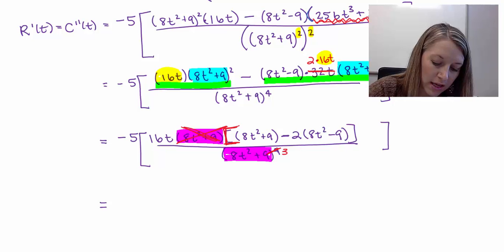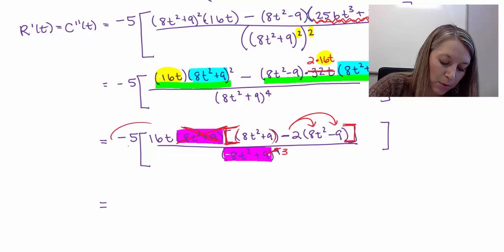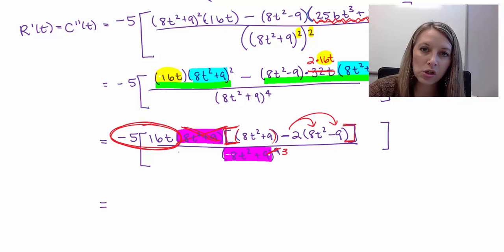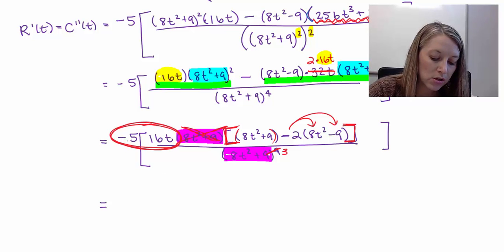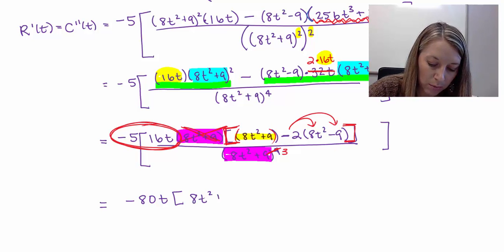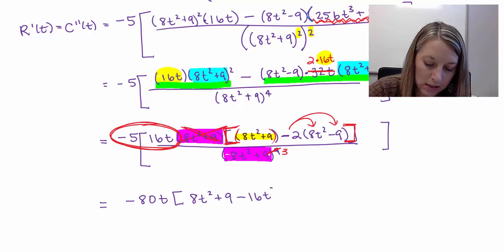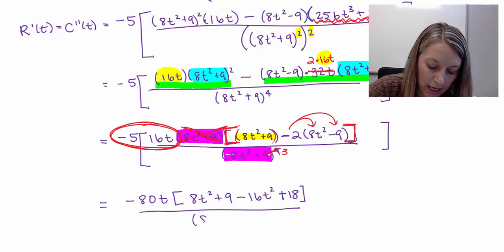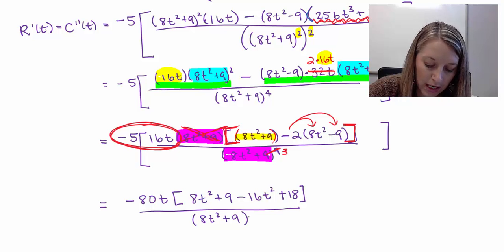Also, let me simplify these brackets here. So I can do that by dropping these parentheses and by distributing that 1 through. Another thing that I can do is I can put these guys together here. It's multiplication, so I can multiply my fractions straight across. So negative 5 times 16t gives me a negative 80t. And then in these brackets, copying down my first unit of 8t² + 9, distributing my negative 2 through my second unit gives me -16t² + 18. And in the denominator, I canceled out one of those, so it gives me (8t² + 9)³.